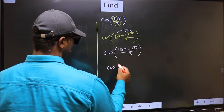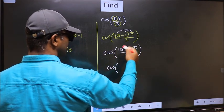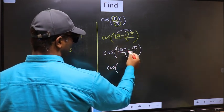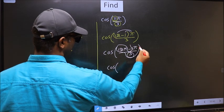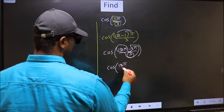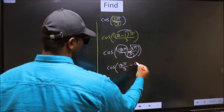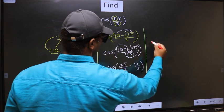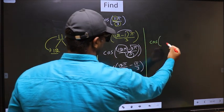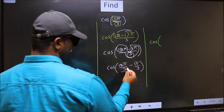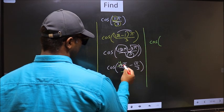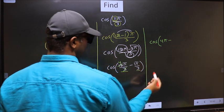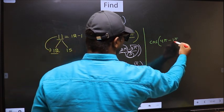Now cos. In this, you should split the denominator in this way. That is 12 pi by 3 minus 1 pi by 3. Next, cos. Now here you should cancel. 3 1s, 3 4s. So we get 4 pi minus this, no change, 1 pi by 3.